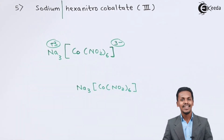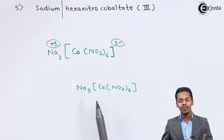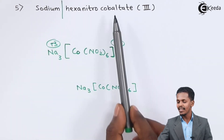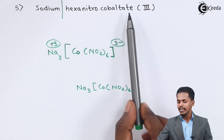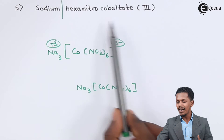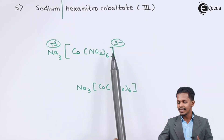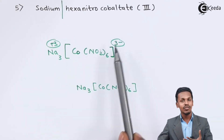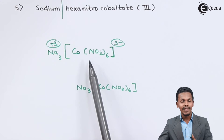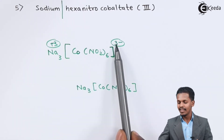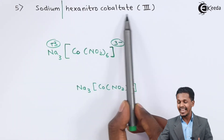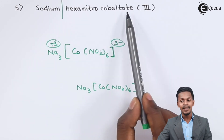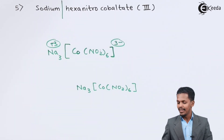The suffix '-ate' in cobaltate indicates a negative charge on this anionic complex. That is the reason the word ends with 'ate.' This is the chemical formula for sodium hexanitrocobaltate.